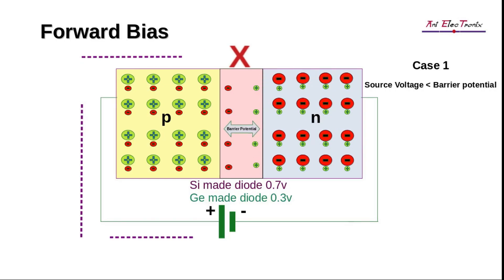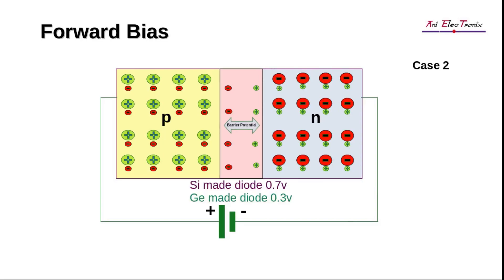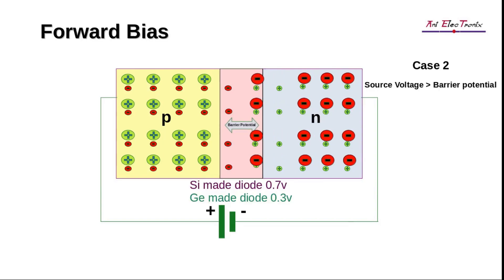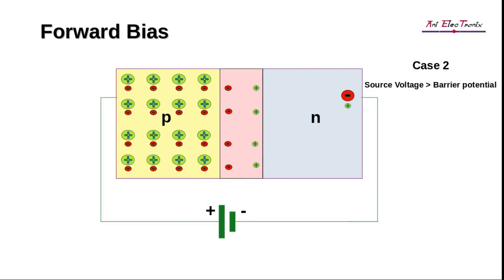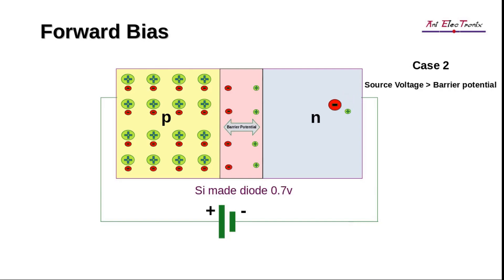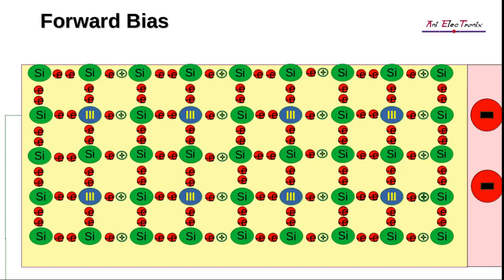As a result, no current will flow through the diode. When the source voltage is greater than the barrier potential, the free electrons will have enough energy to cross it. To understand this concept better, let's look at what happens to a free electron as it travels through the circuit. If the source voltage of the silicon diode is greater than 0.7 volts, a free electron gains enough energy to penetrate the depletion region and enter the P region, where it recombines with a hole and becomes a valence electron.